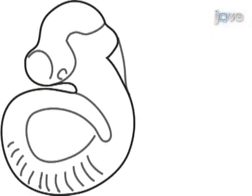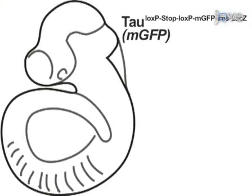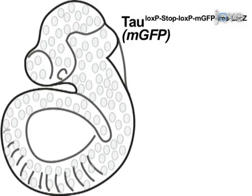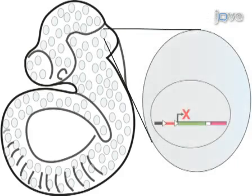In X-Cre-ER MGFP embryos, MGFP-LacZ is a reporter allele present in all cells, represented by gray ovals. X-Cre-ER, where X represents gene regulatory elements controlling Cre-ER expression,